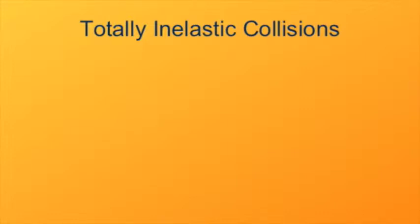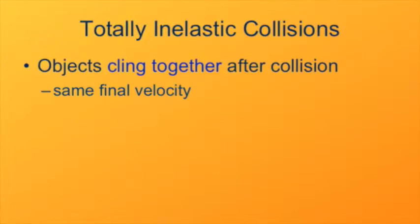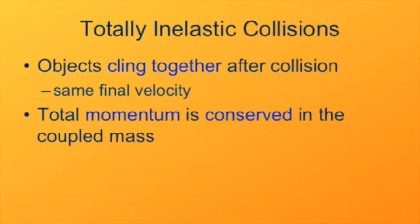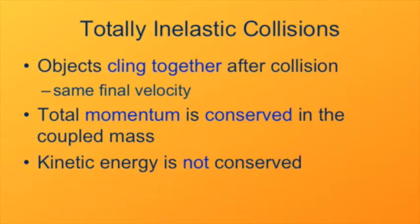We'll start with the simplest first: the totally inelastic collision. In this type of collision, the objects cling together after the collision. What that means mathematically and physically is that the interacting objects have the same velocity after the collision. Because this is an isolated system, total momentum is conserved in the collision. Kinetic energy, however, is not conserved.